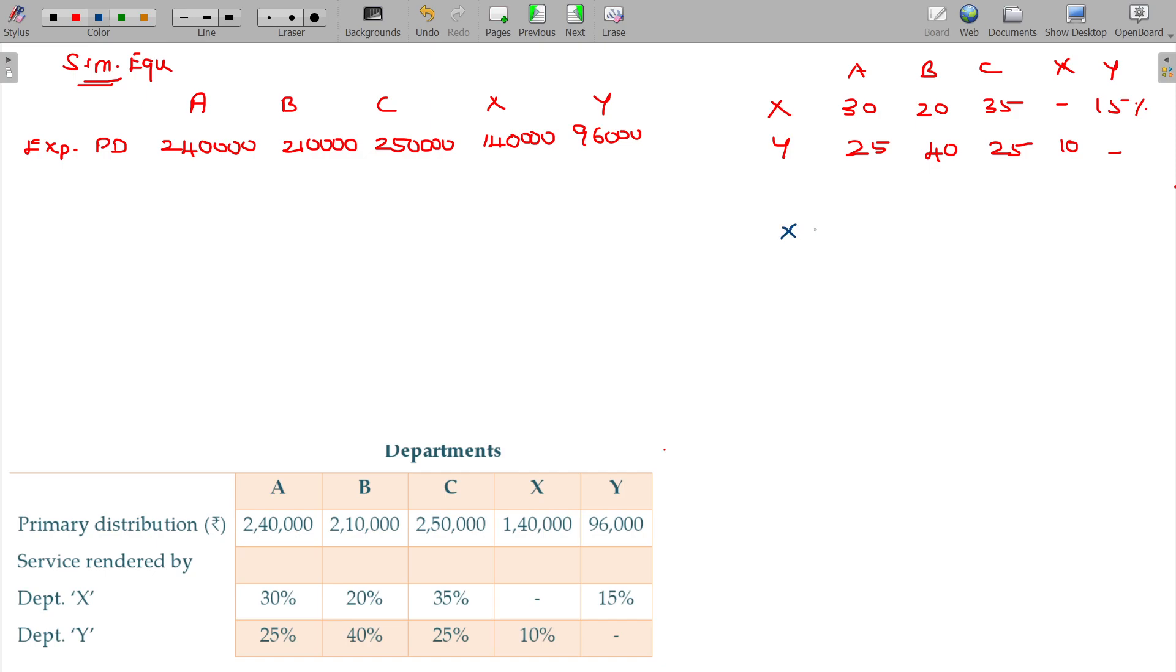What is the overhead of X? The overhead of X being 140,000. What is the percentage of Y department's overhead that should be borne by X? 10 percentage. So, X equals 140,000 plus 0.1 Y.